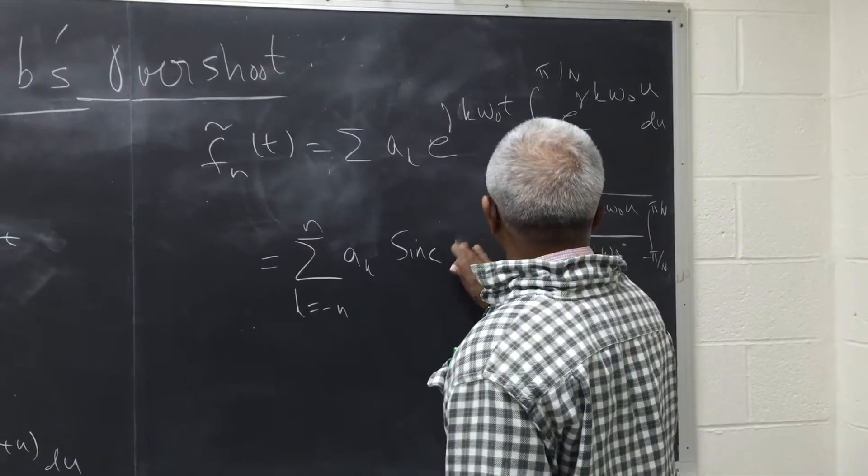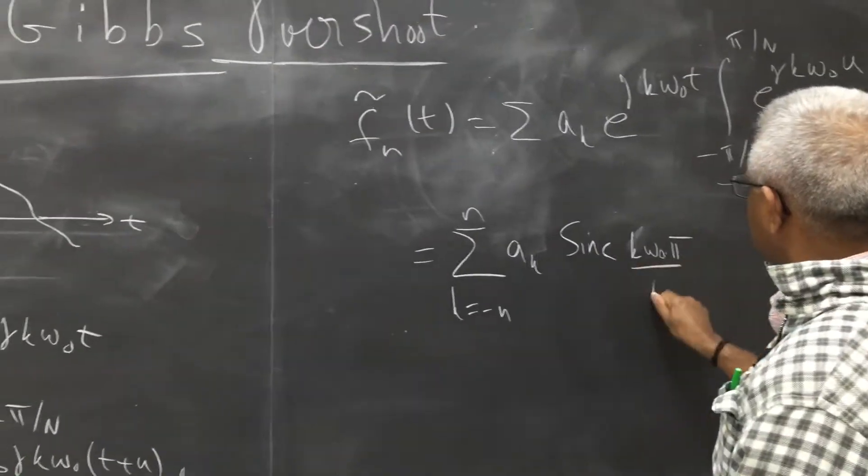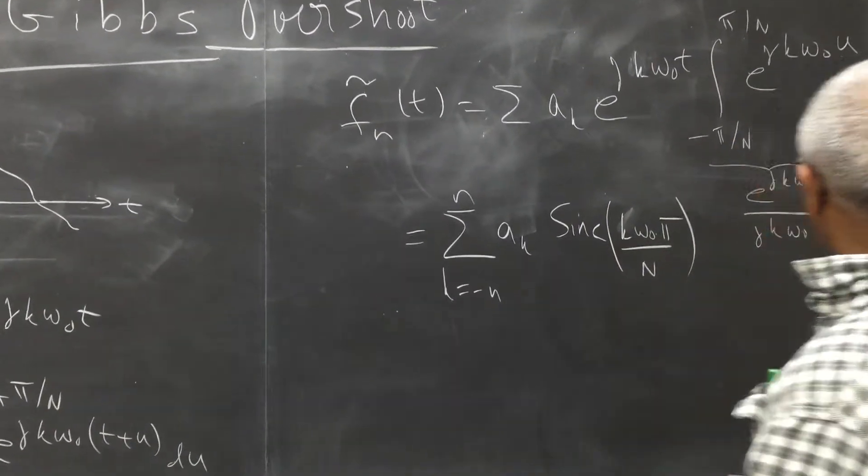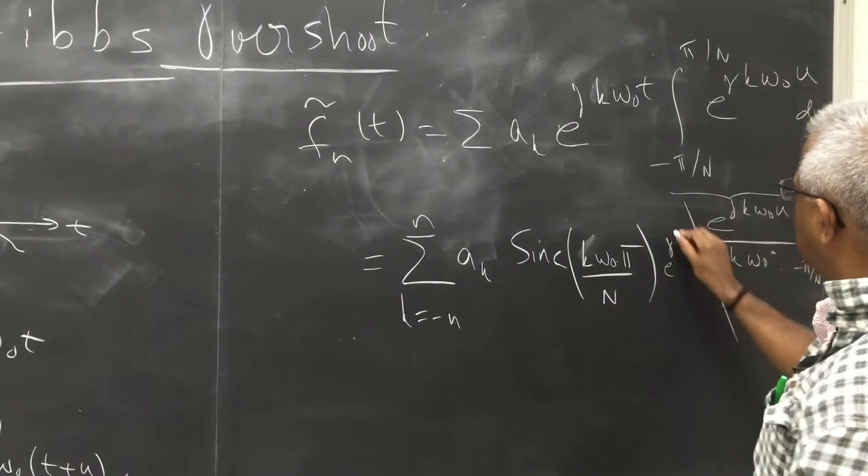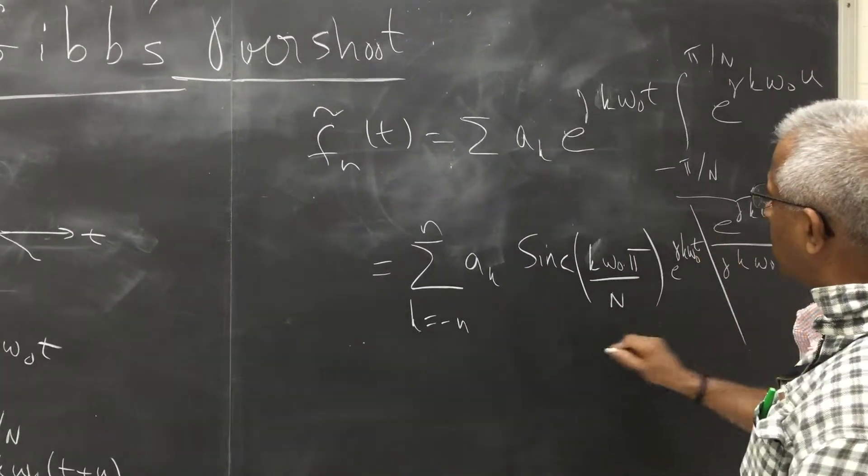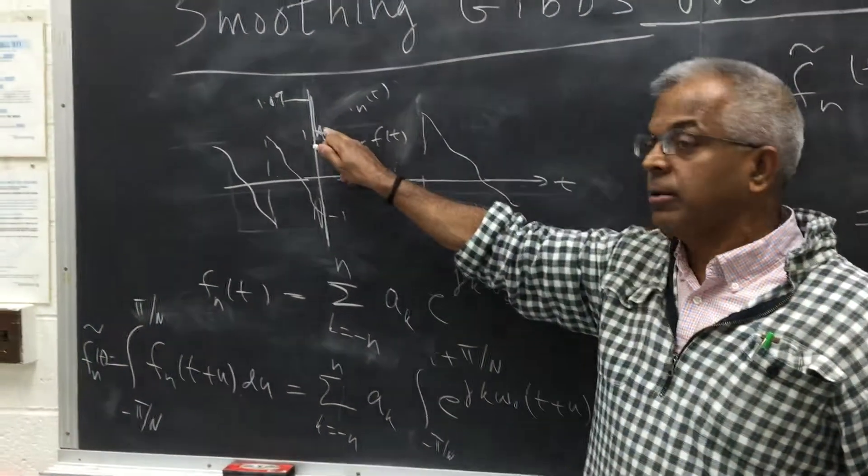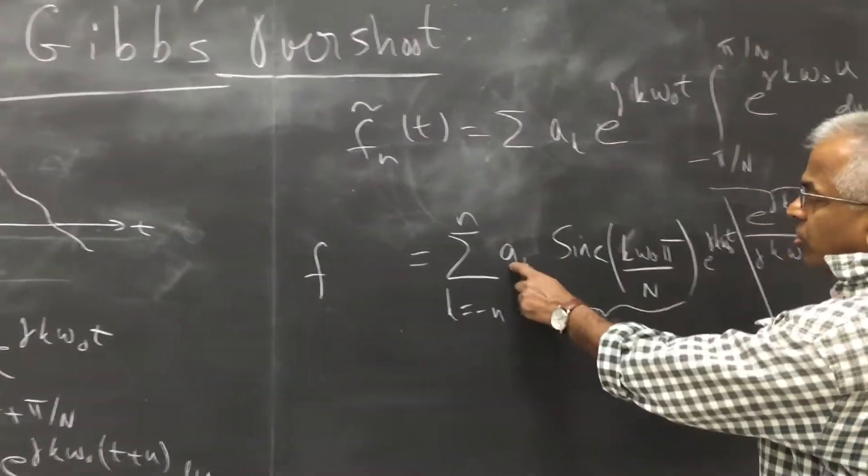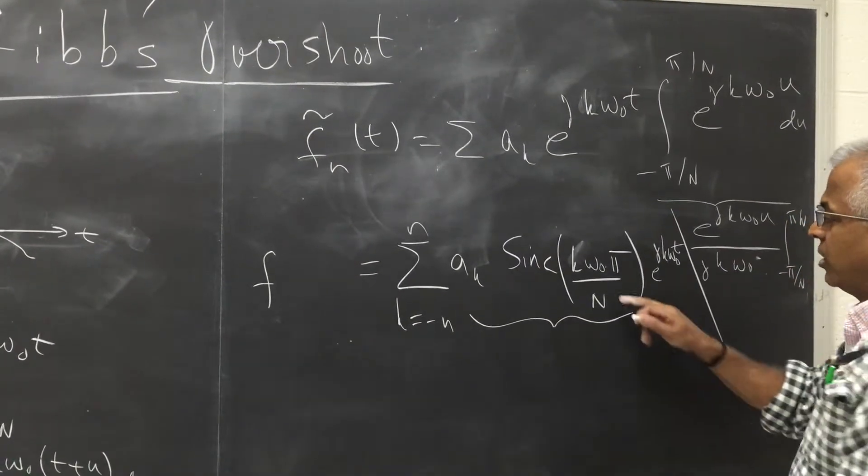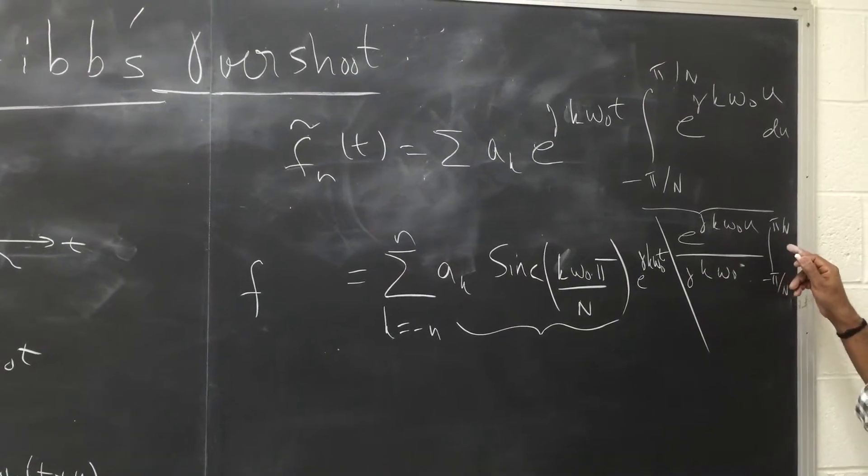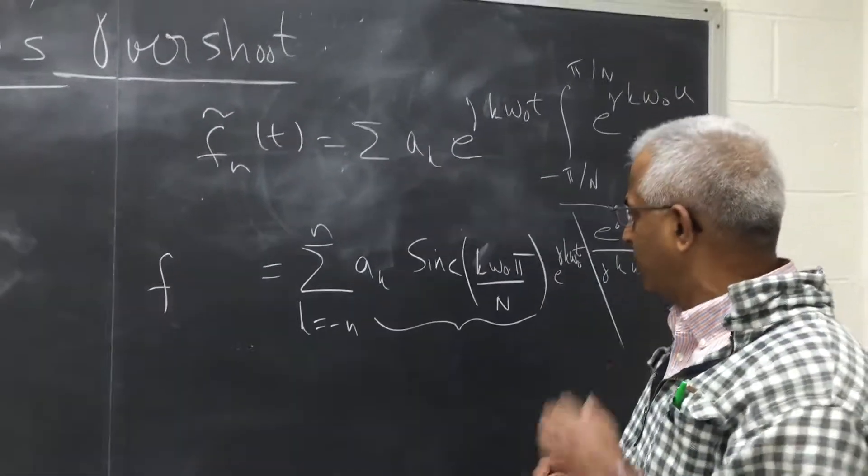sinc(k omega_0 pi over n) multiplied by e raised to j k omega_0 t. So bottom line is this is the moral of the story. If you have an original series which has got the Gibbs phenomenon then when you sum up, if you modify these coefficients by this sinc window appropriately chosen. Of course you can choose this to be pi divided by tn, then omega_0 will cancel and this will be independent of omega_0.